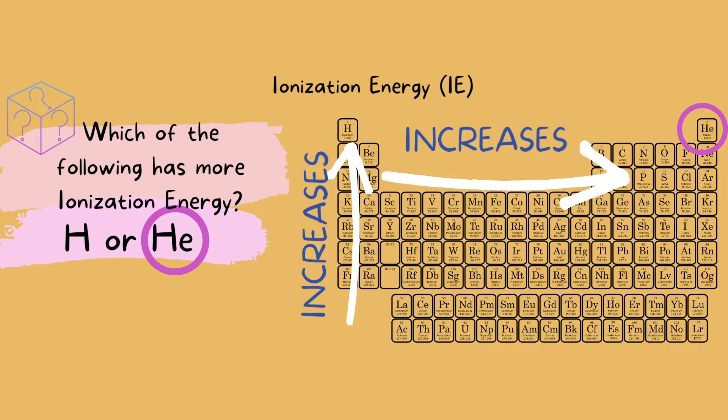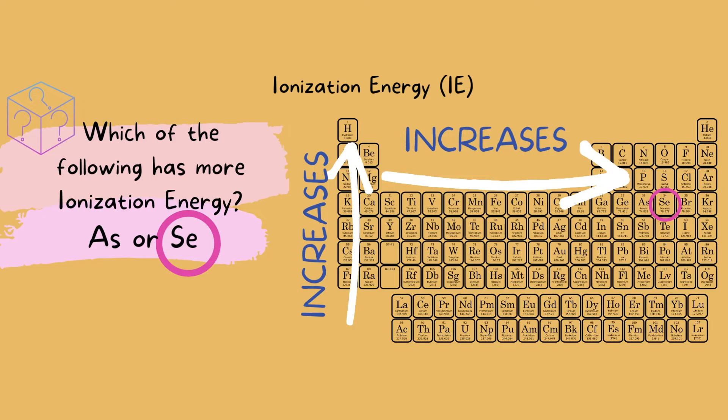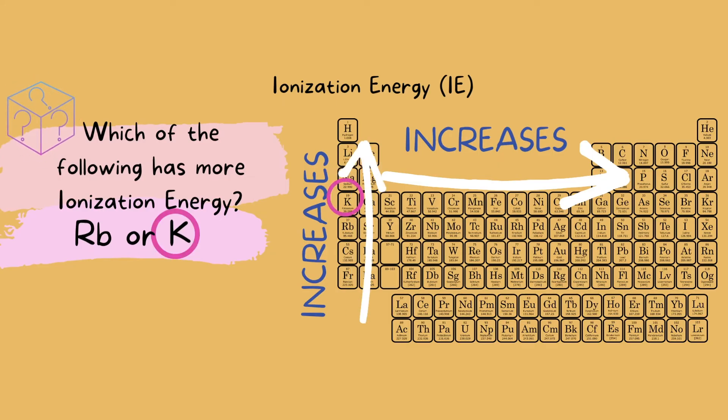That just means it takes more energy from another atom to come around and steal helium's valence electrons, and very little energy to steal hydrogen's valence electrons. How about arsenic and selenium? Selenium has more ionization energy here. How about rubidium and potassium? Potassium is our answer here.